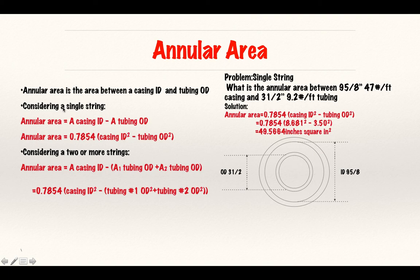The area of casing ID and tubing OD: annular area is 0.7854 times casing ID squared minus tubing OD squared. For a single string, I have my surface casing, maybe my intermediate casing, and maybe my production casing way down.